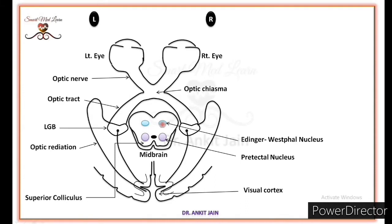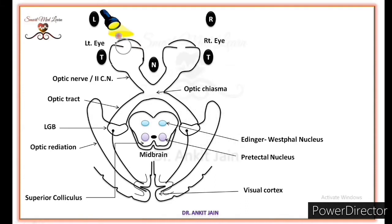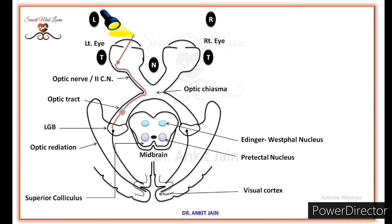Now when we shine the light on the left eye, the visual impulse coming from the temporal side of the retina of the left eye travels through the left optic nerve and reaches the left lateral geniculate body via the left optic tract. From here, most of the visual information reaches the left visual cortex through the optic radiation.